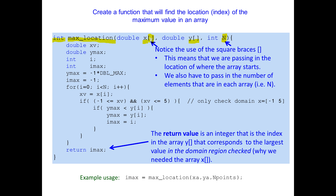This is identical code to what we had before. As we go through the array — here's n, so we go through all the elements — we check to see if x is in the domain we're interested in, which is between minus 1 and 5. Then we store the maximum value and where that index occurred. Ultimately what we're interested in is this index telling us where the maximum location has occurred.